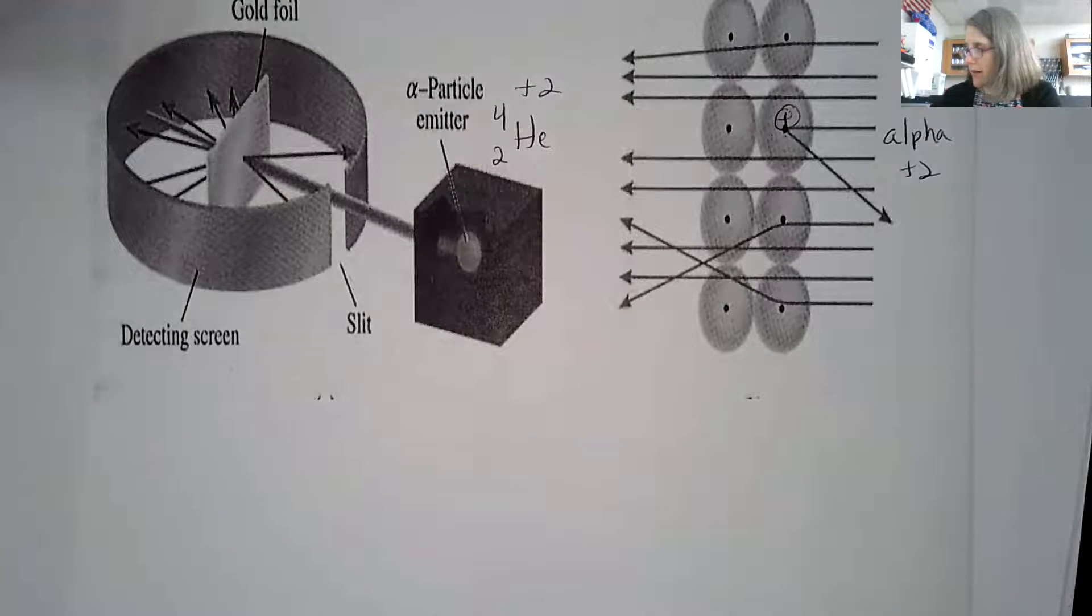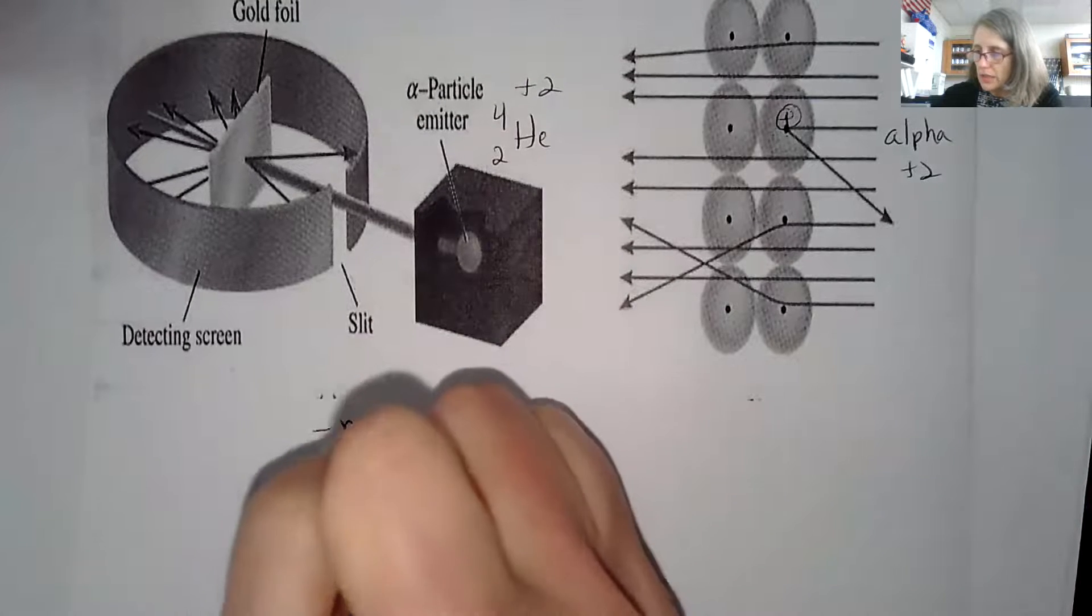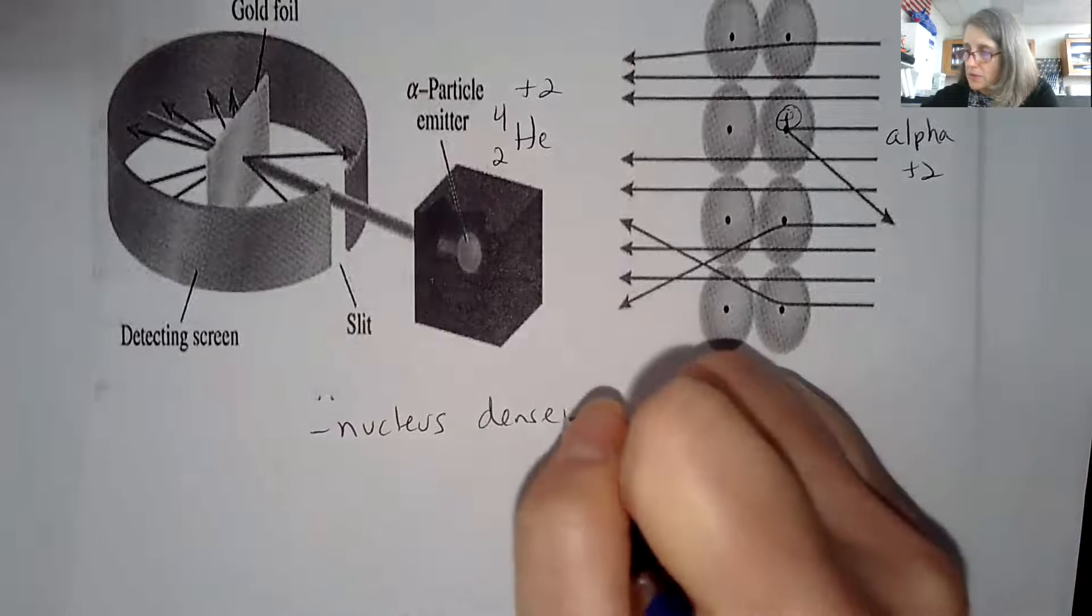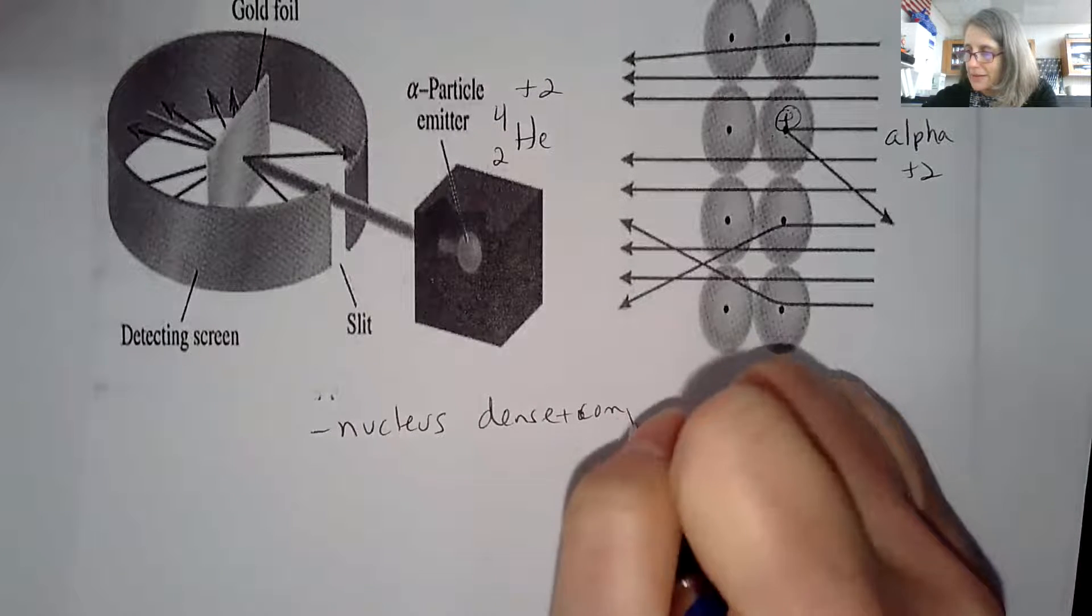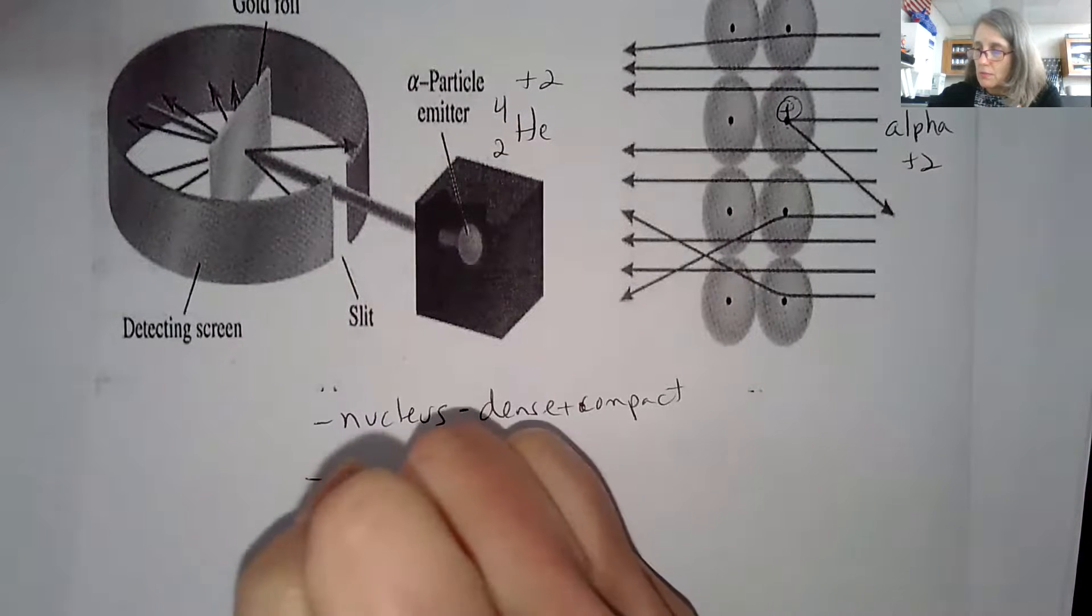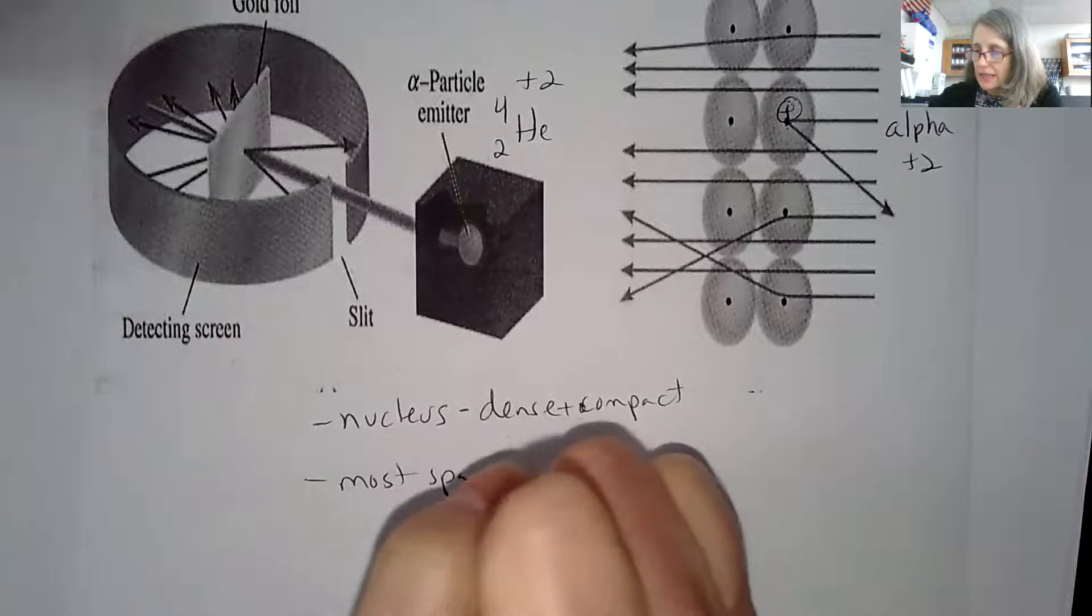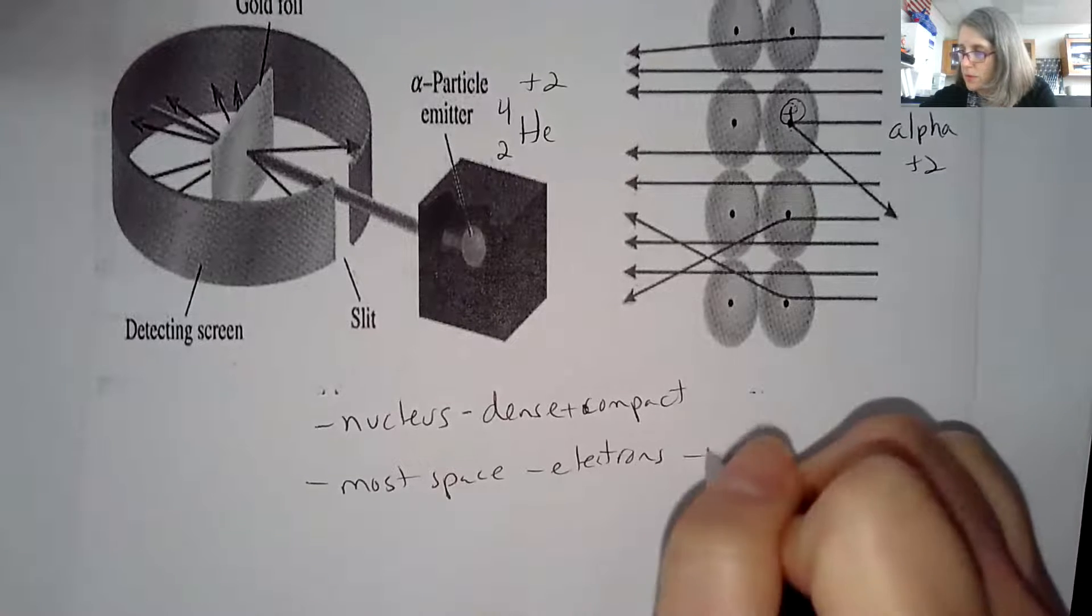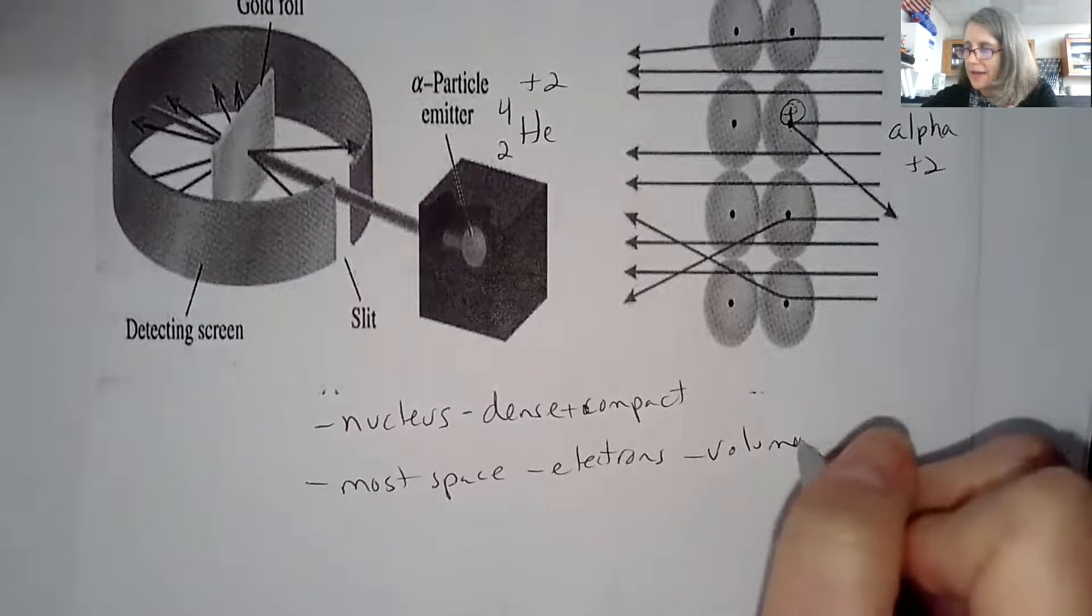This is what you need to know about it. You need to know that the nucleus is very dense and compact, so it doesn't really take up much of the space. Most of the space is taken up by the electrons. That is where it takes up most of the volume of the atom.